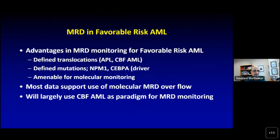MRD in favorable risk AML — there are certain advantages in MRD monitoring for favorable risk AML. Particularly, this is mostly defined translocations, whether it's acute promyelocytic leukemia, core binding factor AML, or defined mutations like NPM1 or CEBPA. Most of these mutations can be quantitatively monitored by molecular methods, and the data support that molecular MRD possibly trumps flow cytometry. In my presentation, I'll mostly use core binding factor as the paradigm, and towards the end we'll talk about NPM1 mutated AML.